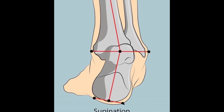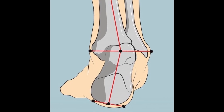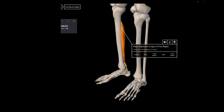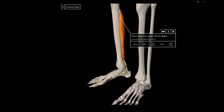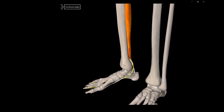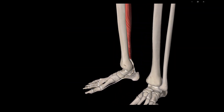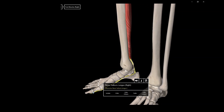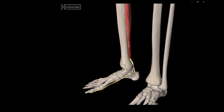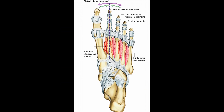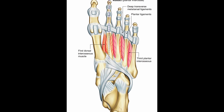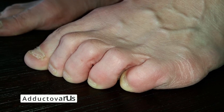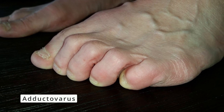the flexor hallucis longus and the flexor digitorum longus have to fire earlier and longer in order to re-supinate the foot. The flexor tendons which attempt to re-supinate the foot end up overpowering the interosseous muscles and we see what's called excessive gripping. We see the hammering and clawing of the lesser digits and the adducto varus deformity of the fourth and fifth toes.